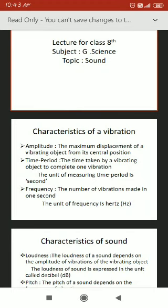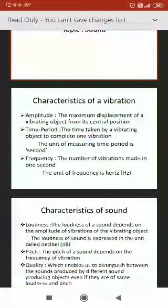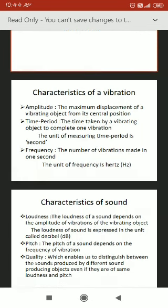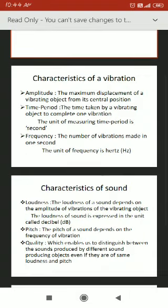With the simple pendulum in your hand, you can find three properties: amplitude, time period, and frequency. Firstly, amplitude is the maximum displacement of a vibrating object from its central position. The pendulum starts at the center at rest. When it moves, it goes to the left, then right, then back to the center. The distance it covers is the amplitude.